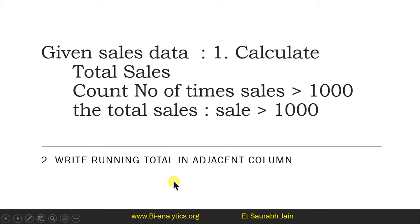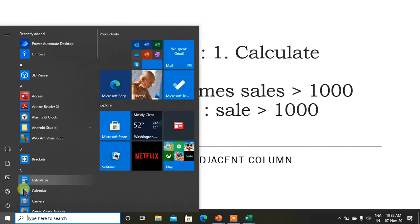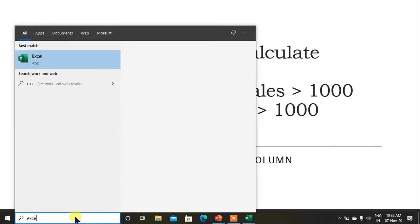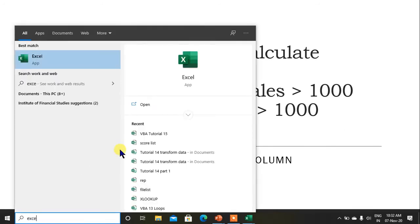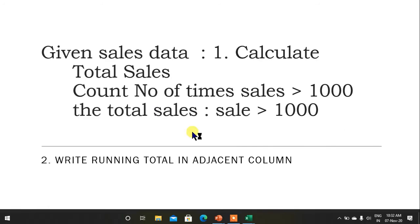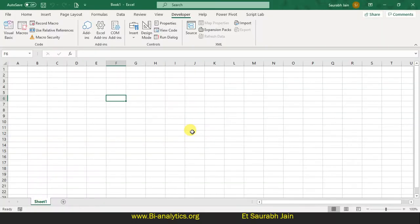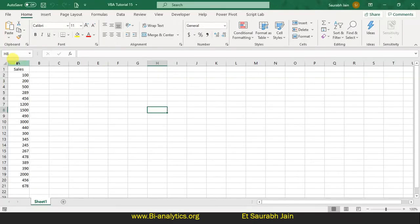Second is: write running total in an adjacent column — we will do this later. But let's do the first exercise. I have the data. Let me open another instance of Excel. We have VBA tutorial 15 in which I have written the data. This is the sales data.